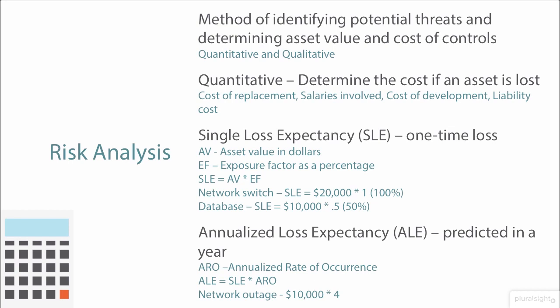With this kind of factual data, we can now start to make decisions backed up by dollars and cents. A generator will probably cost more than $40,000, but backup batteries that keep the network up for 20 minutes might reduce the loss to the organization. For the exam and for real life, remember that cost of replacement includes salaries and time, and the business might be losing money due to lack of sales or customer dissatisfaction — that also needs to be factored in.